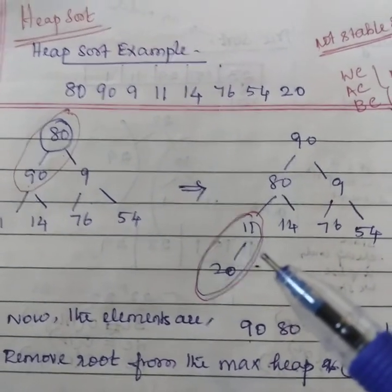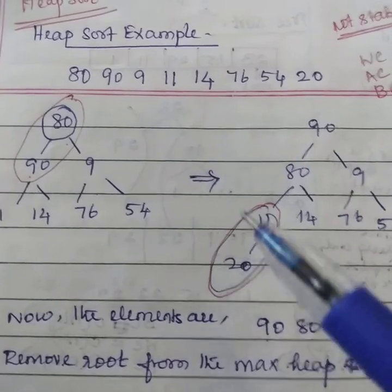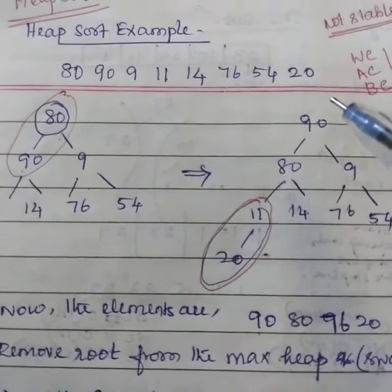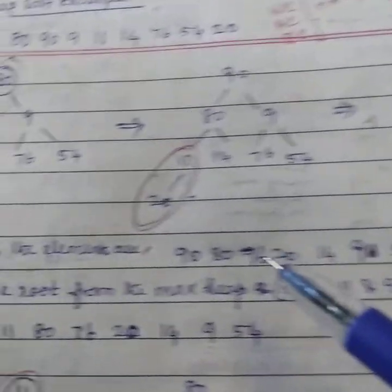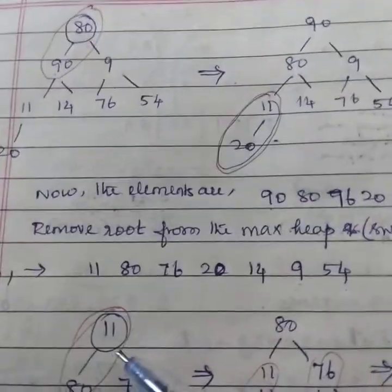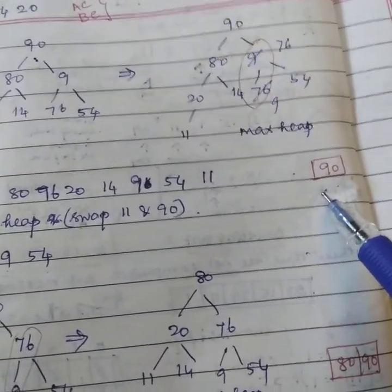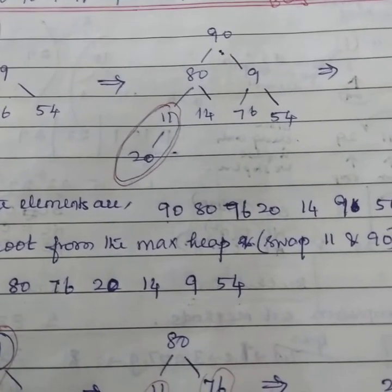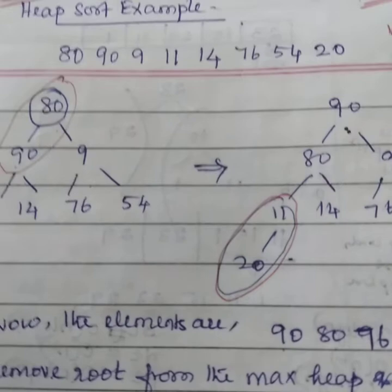The construction process is as follows. First, we need to construct a binary tree for these values. Then we need to convert it into max heap. After that, we need to delete the root and put it in the sorted list. And we need to repeat until it becomes empty and finally display the sorted list. These are the points to be noted.